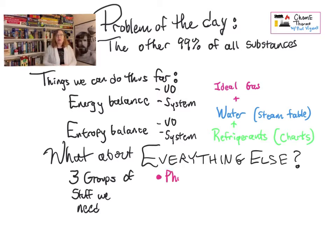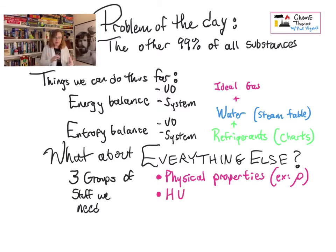So number one thing we want to be able to do with all of the world's materials is we want to be able to describe their physical properties. Sometimes we're going to measure them. Sometimes we are going to have to be able to calculate them. So we need to be able to do that. We can get density, for example, for water or for an ideal gas from the equations, right?